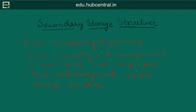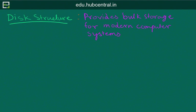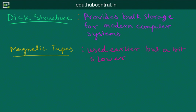Secondary storage structure provides bulk storage for modern computer systems. The hard disk that stays in your computer is a kind of this structure. In primitive days we used magnetic tape disks, but they were quite slow — like cassettes where you had to record songs serially. If you wanted to access the third song you had to go through the first and second, so it was slow.